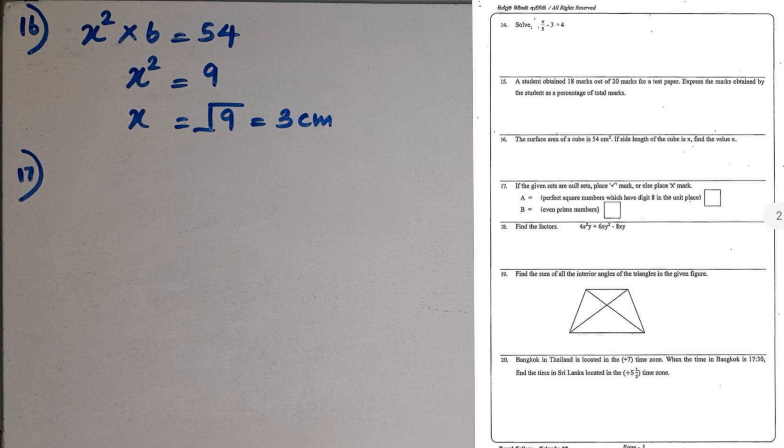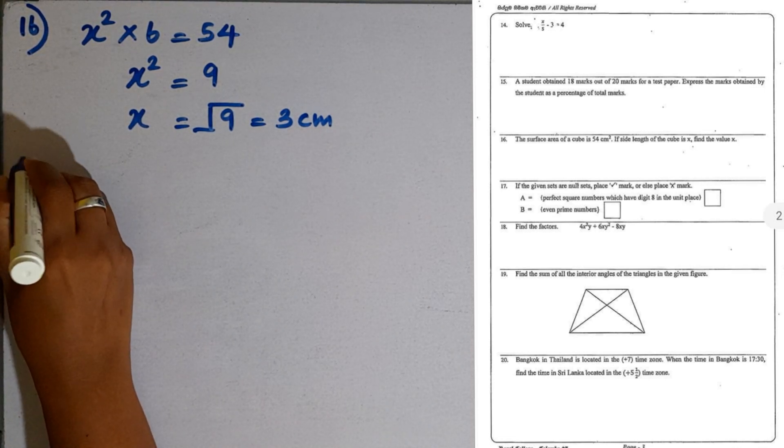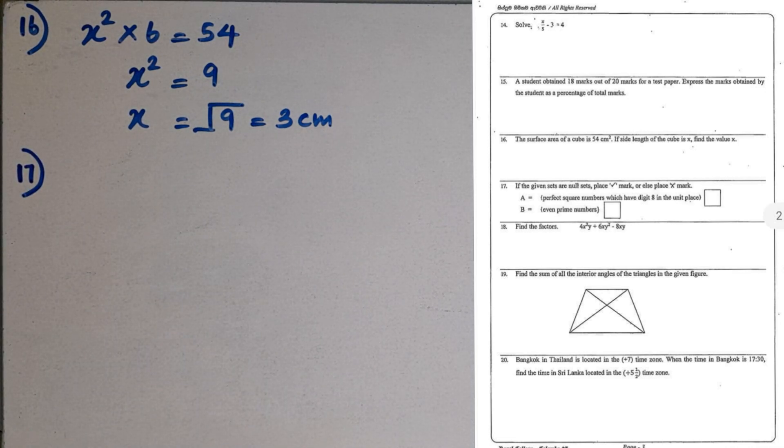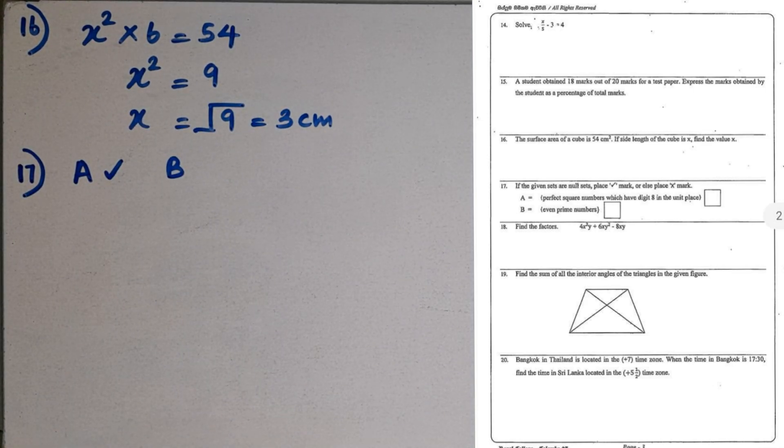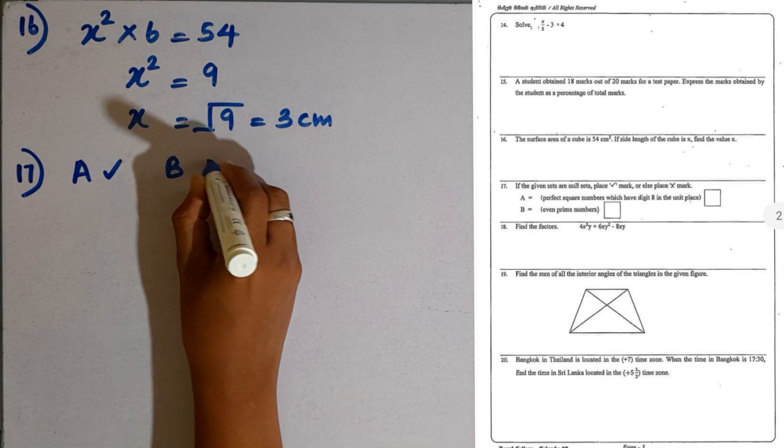Question number 17. If the given sets are null sets, place a tick, or else place a cross mark. Part a: perfect square numbers which have digit 8 in the units place. Any perfect square doesn't have the digit 8 as the last digit. So A is a null set. Part b: even prime numbers. There is one even prime number, that is 2. So this is not a null set.